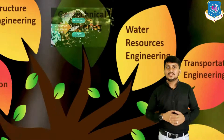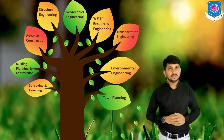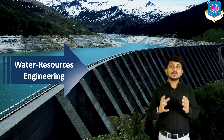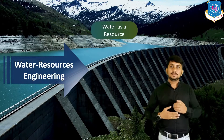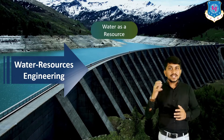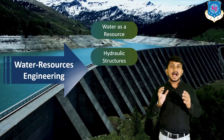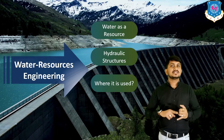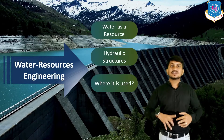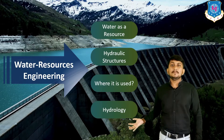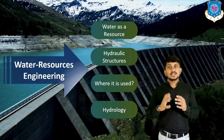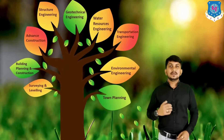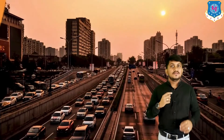Now let's discuss the branch of water resource engineering. It deals with measurement, utilization, distribution, and development of water resources for agriculture, municipal, and power generation purposes. It includes planning, designing, and construction of hydraulic structures such as dams, weirs, bridges, canals, hydropower stations, and pipe networks. Hydrology is a sub-branch of water resource engineering that includes the study of sources of water, measurement of rainfall, runoff, and flood control.